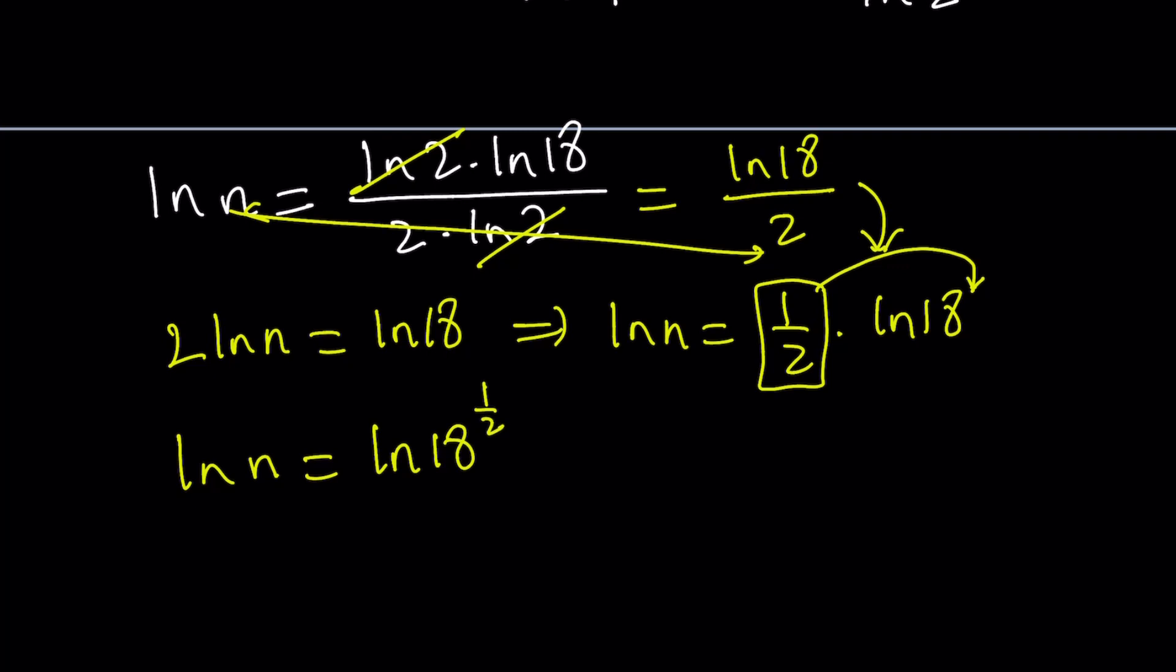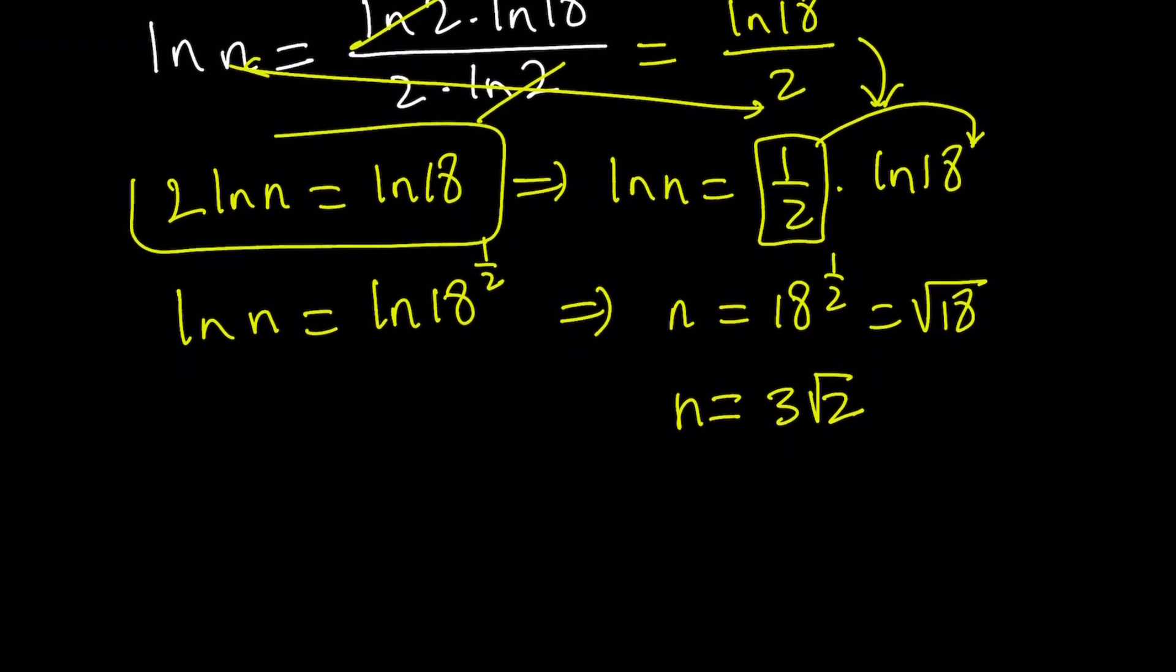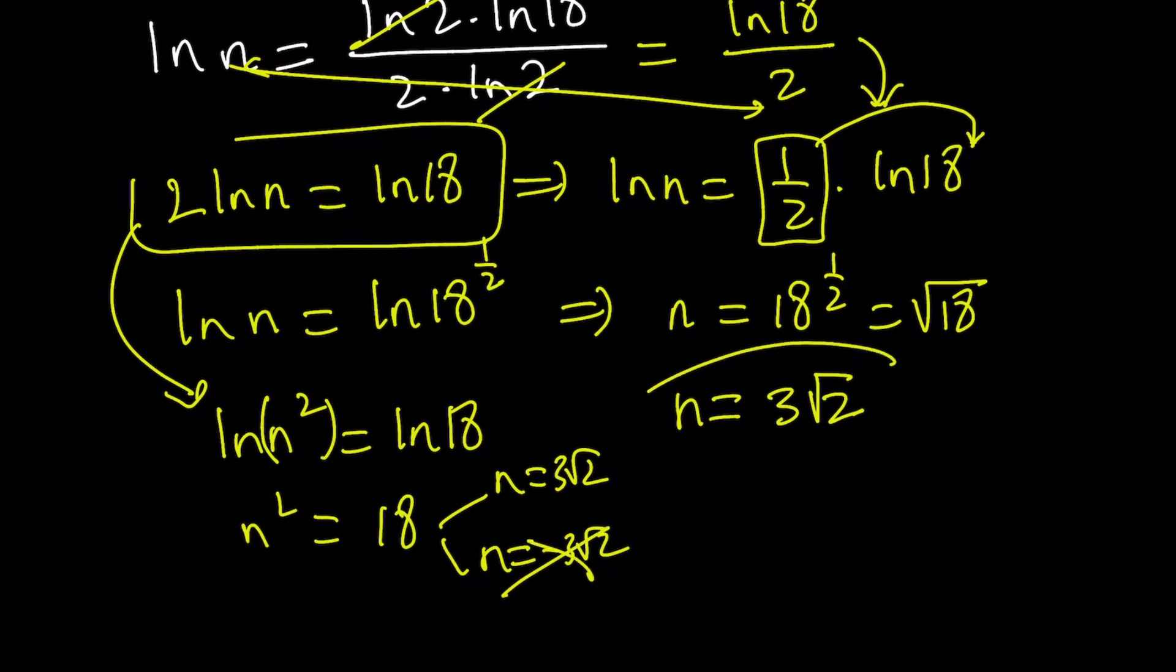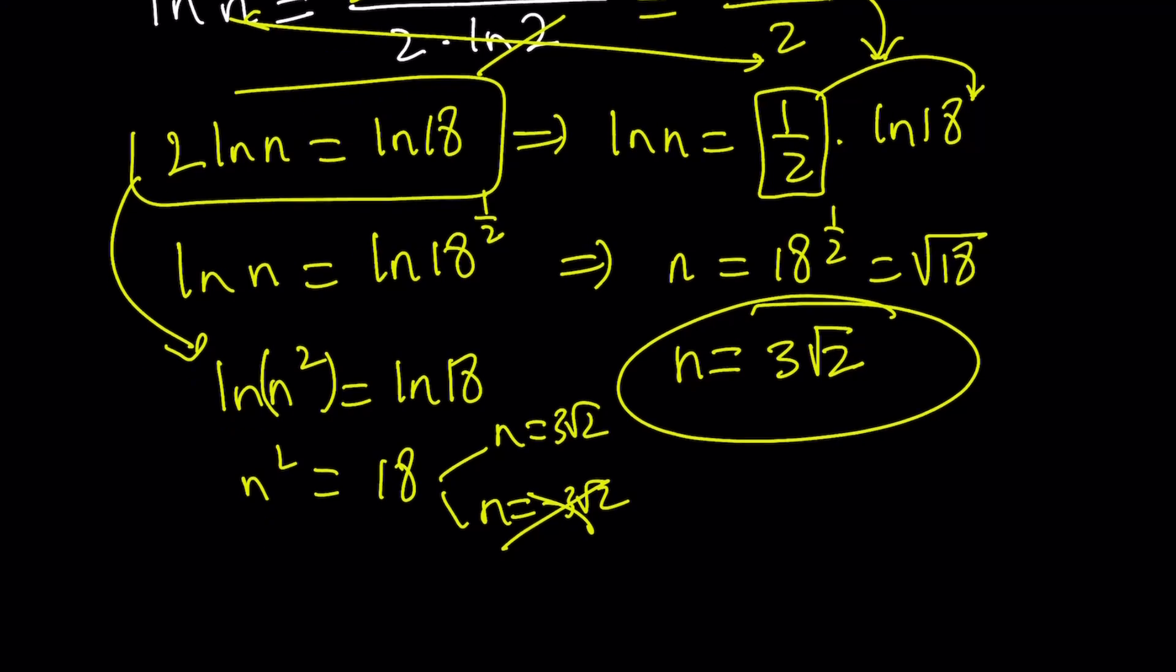That becomes ln n equals ln 18 to the power 1 half. In this case, we're dealing with positive numbers because ln is only defined on the positive reals. So we can set the arguments equal: n equals 18 to the power 1 half, which can be written as square root of 18. And square root of 18 can be simplified as 3 root 2. We're only going to go with 3 root 2.